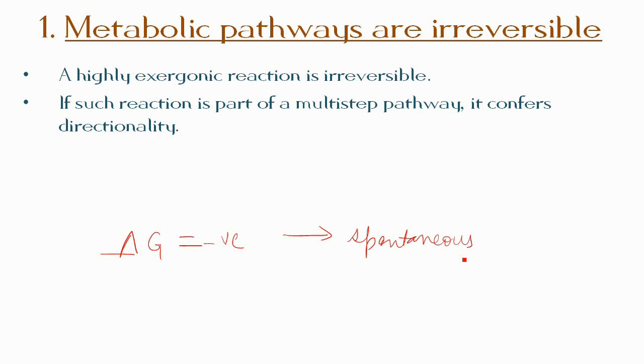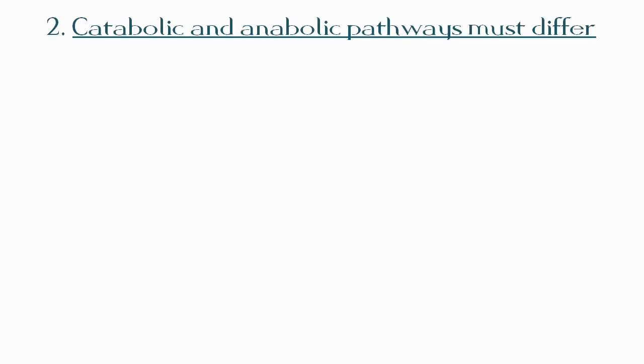Catabolic and anabolic pathways must differ. Metabolism is essentially a linked series of chemical reactions forming metabolic pathways.